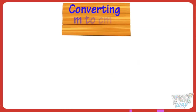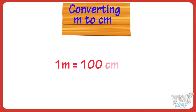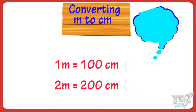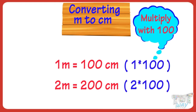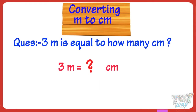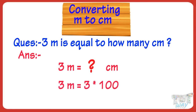Now let's learn converting meters to centimeters. 1 meter equals 100 centimeters. So 2 meters equals 200 centimeters — that is, we multiply by 100. 3 meters will be equal to how many centimeters? It will be 3 multiplied by 100, so we get 300 centimeters.